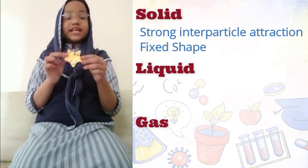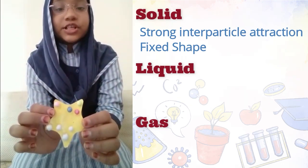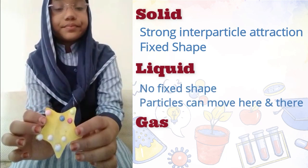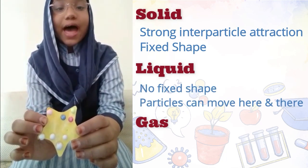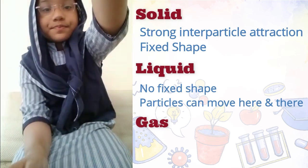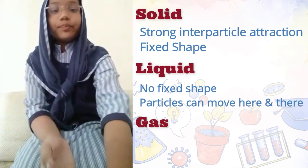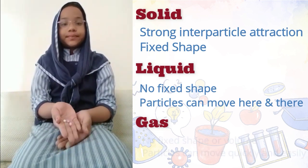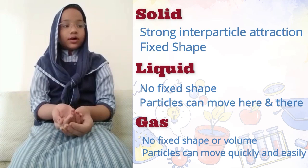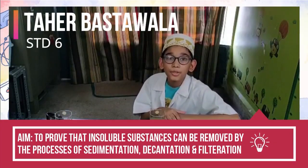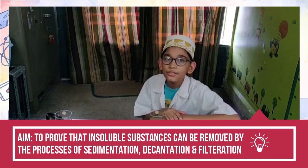Particles arrangement in liquid: liquid does not have a fixed shape and allows particles to move here and there. Two examples of liquid are water and milk. Particles arrangement in gas: gas does not have a fixed shape or a fixed volume, and gas particles can move quickly and easily here and there.